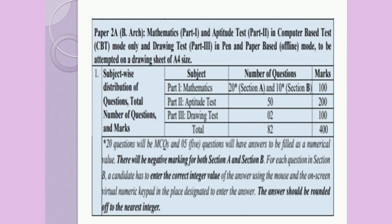Paper 2A, that is of Architecture, will deal with the areas of Mathematics, Aptitude Test and Drawing Test. Part 1 Mathematics and Part 3 Drawing Test section will comprise 100 marks each, whereas Part 2 Aptitude Test will be of 200 marks.